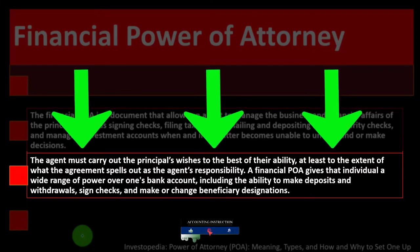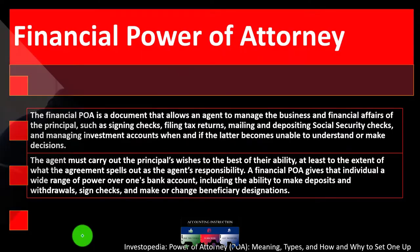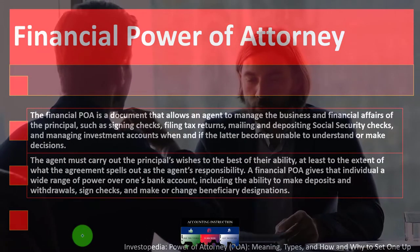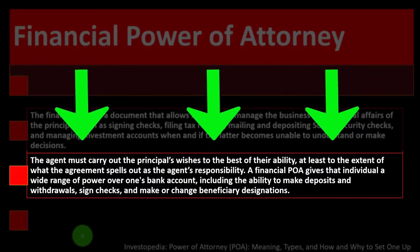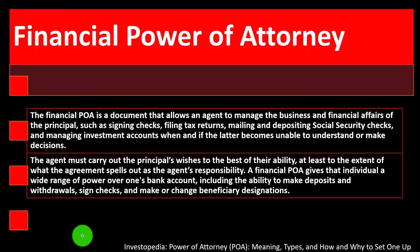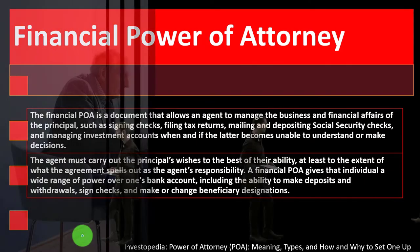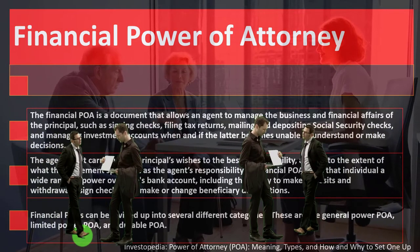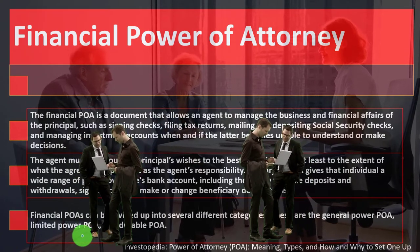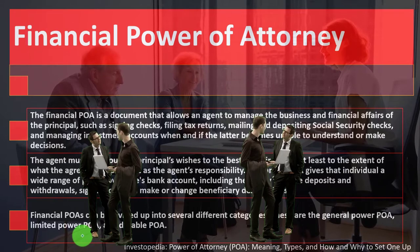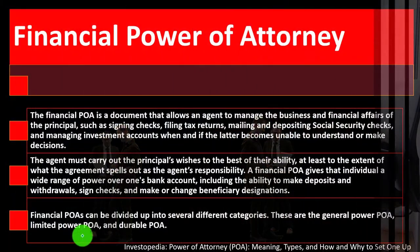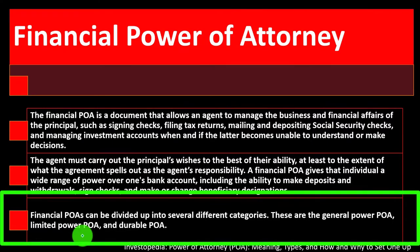The financial POA is a document that allows an agent to manage the business and financial affairs of the principal, such as signing checks, filing tax returns, mailing and depositing Social Security checks, and managing investment accounts. The agent must carry out the principal's wishes to the best of their ability. A financial POA gives that individual a wide range of power over one's bank account, including the ability to make deposits and withdrawals, sign checks, and make or change beneficiary designations.